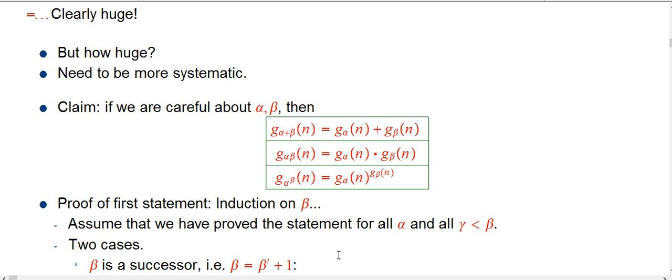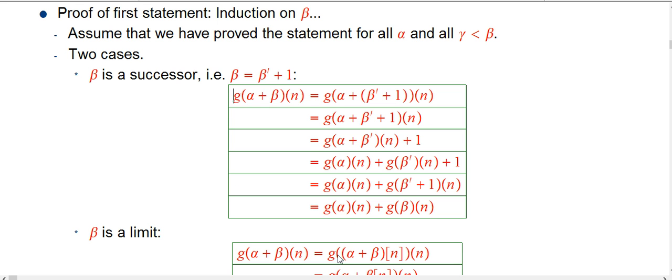There's two very different cases. One is that beta is a successor ordinal, so we could write beta as beta prime plus 1. We start with the left-hand side of what we want to prove. We want to prove that g of alpha plus beta of n is equal to something. In this special case, we're assuming that beta is a successor of specifically beta prime. Ordinal addition is associative, so we have g of some ordinal plus 1 of n, and that is exactly where one of the rules for g activates.